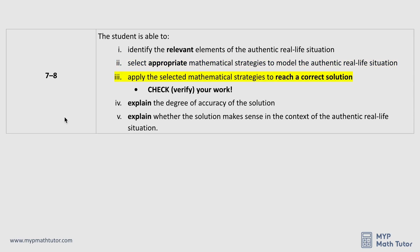In order to earn a 7 or 8 in the third strand, you need to make sure you have a correct solution to the problem. The main thing you need to do to ensure your solution is correct is to check or verify your work. Even if you check your work and it doesn't seem like your answer is correct, include this in your final assignment. Show your teacher that you at least checked your solution.